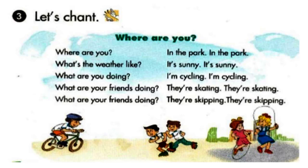1, 2, 3, 4. Where are you? In the park. In the park. What's the weather like? It's sunny. It's sunny. What are you doing? I'm cycling. I'm cycling. What are your friends doing? They're skating. They're skating. What are your friends doing? They're skipping. They're skipping.